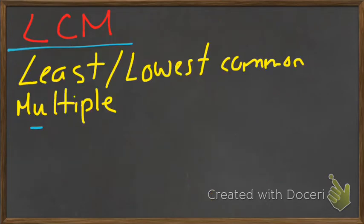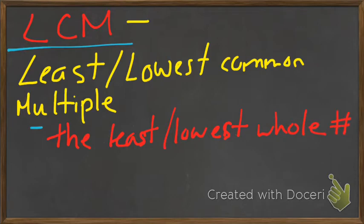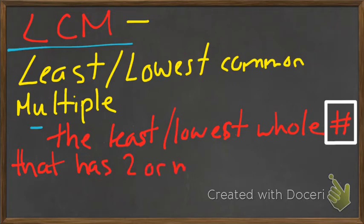As we just said, the LCM is our least or lowest common multiple. Now, that is defined as the least whole number. The least or lowest whole number that has two or more given numbers as factors. That's a lot of words for a definition. What always goes well with these are examples.